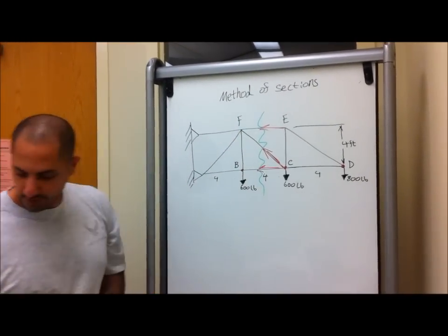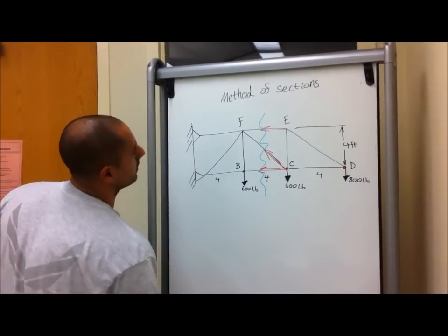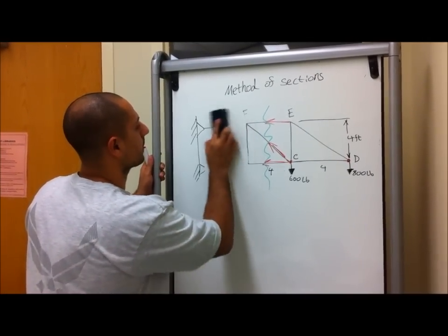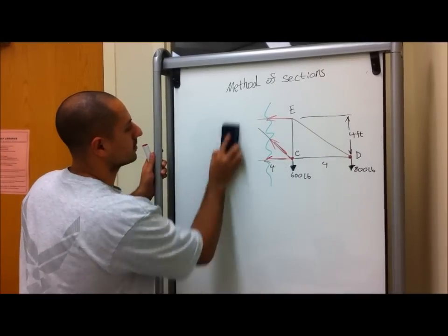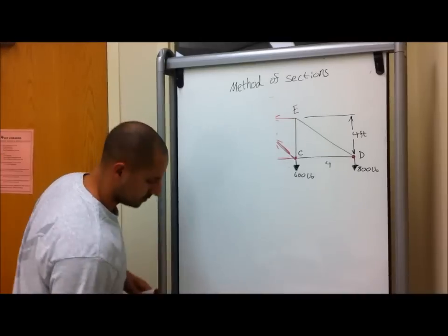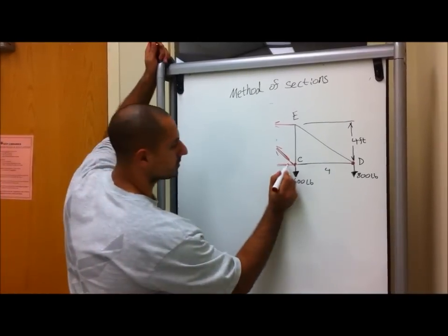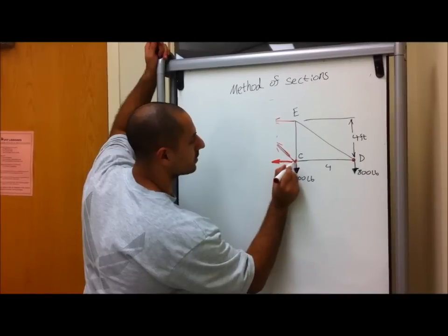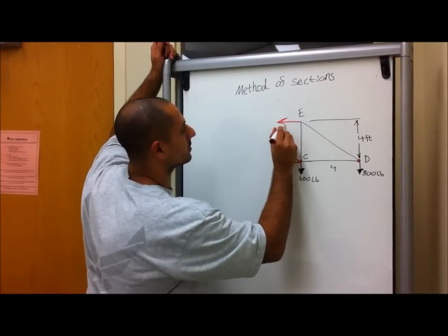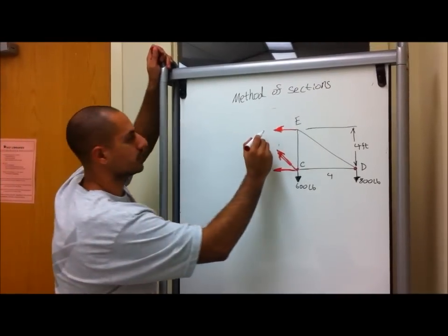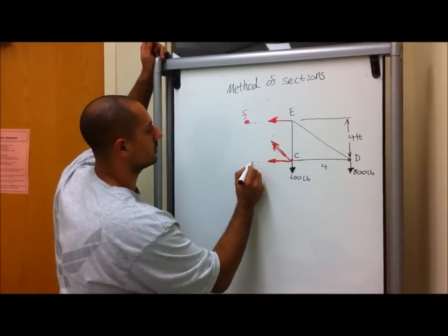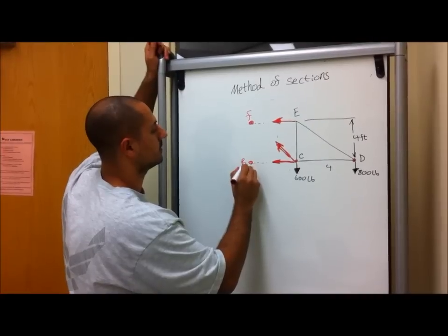The way we use the method of sections is literally we have to cut this in half. So cutting it in half, we're literally saying anything on this side we don't care about. So let me just redraw this real quick. So literally what you're dealing with right now, we have force going this way. If we cut it in half, and force going that way. Don't forget that we have the point over here, which is F, and then we also have the point B over here.